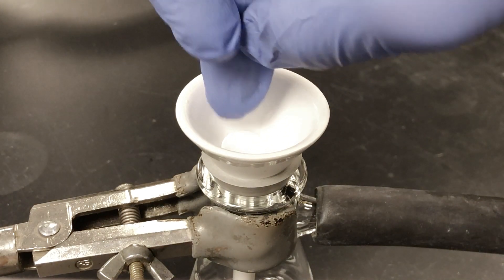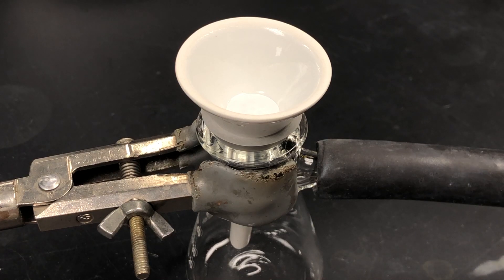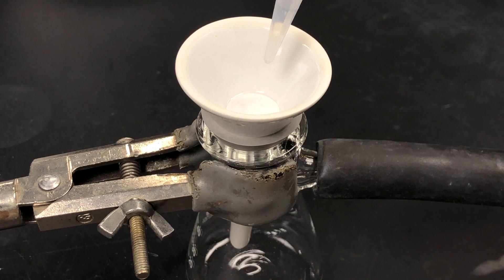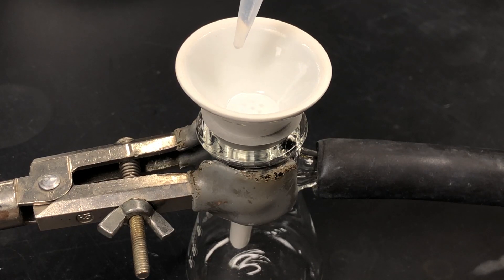Before you begin, make sure to wet your filter paper with a few drops of whatever solvent you are using for that experiment. This will create a seal between the filter paper and the funnel. If you skip this step, you may lose some of your solid under the filter paper.